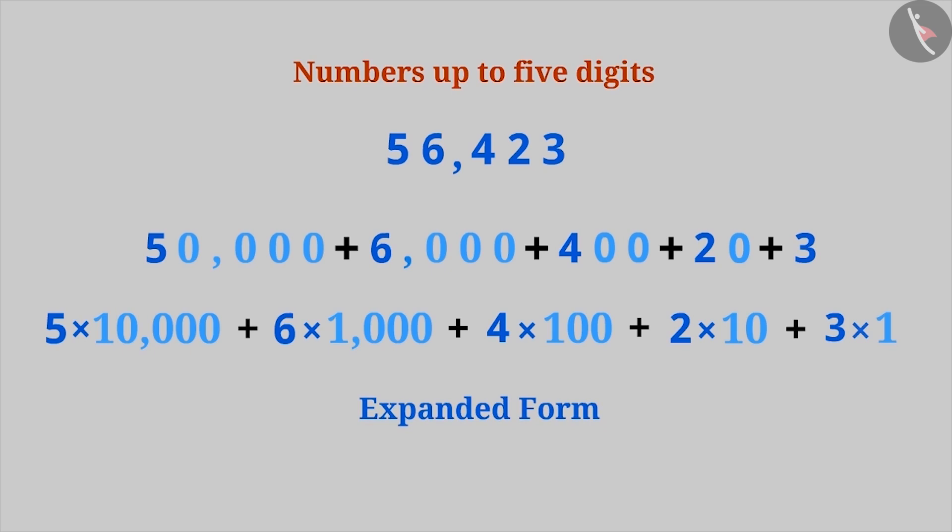Now, we can see that this number has a group of five ten thousands, a group of six thousands, a group of four hundreds, a group of two tens and three ones.